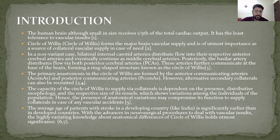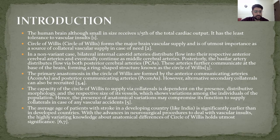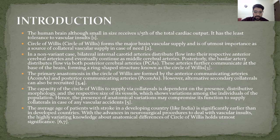The introduction to my study: the human brain, although small in size, receives one-fifth of the total cardiac output and has least tolerance to vascular insults. The circle of villas forms the major brain vascular supply and is of utmost importance as a source of bilateral vascular supply in case of need. In a non-variant case, bilateral internal carotid arteries distribute flow into their respective anterior cerebral arteries and eventually continue as middle cerebral arteries. Posteriorly, the basilar arteries distribute flow by posterior cerebral arteries. The arteries further communicate at the base of the brain forming a ring-shaped structure known as the circle of villas.